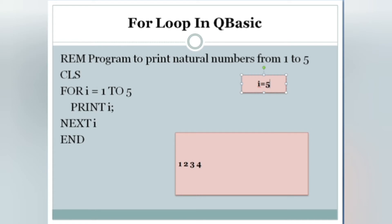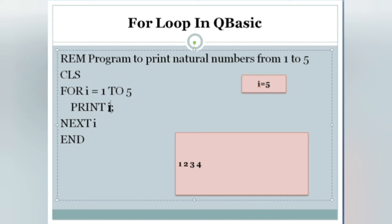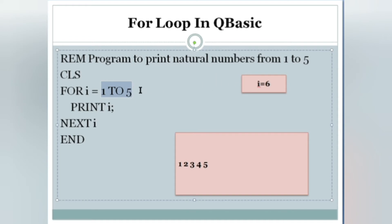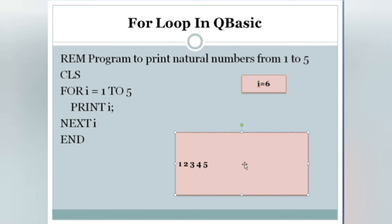Then i becomes five, goes to the FOR loop, five is in the range of one to five, condition true, print i — five is printed. Then NEXT i makes i equal six. It goes back to the loop, checks the range one to five, but i is six — condition false. When condition is false, it jumps to the end of the program. We have successfully printed values from one to five using the FOR loop.